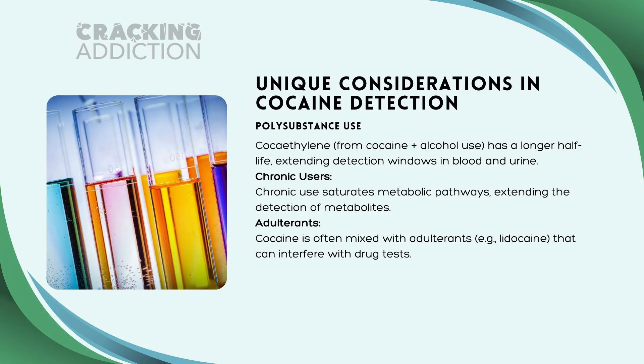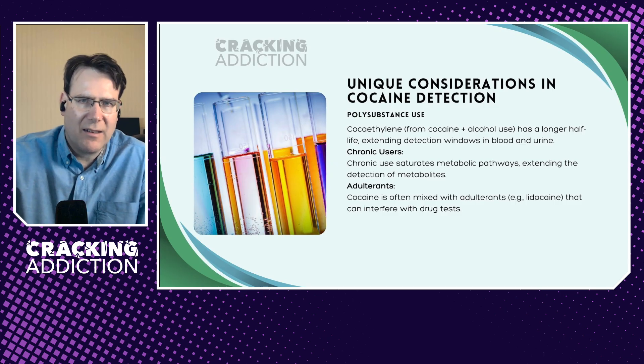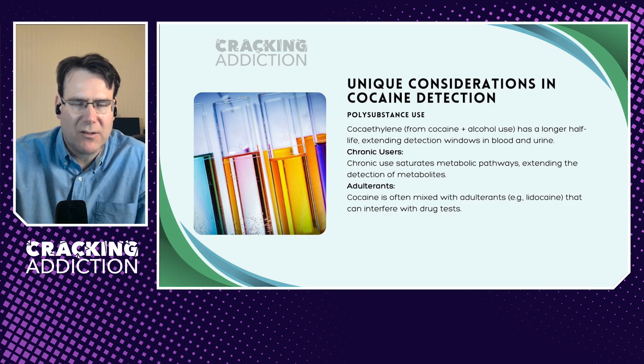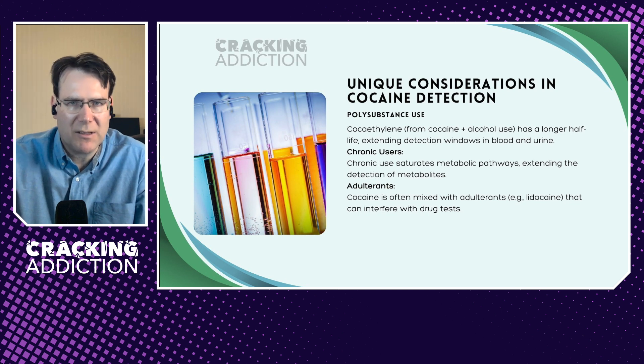In terms of considerations around cocaine detection, we need to be aware of factors that impact upon it. For polysubstance use: cocaethylene, produced from cocaine and alcohol via transesterification, has a longer half-life and therefore extends the detection windows. With chronic use, cocaine saturates metabolic pathways, extending the detection of metabolites because there are insufficient enzyme systems to fully metabolize the cocaine.